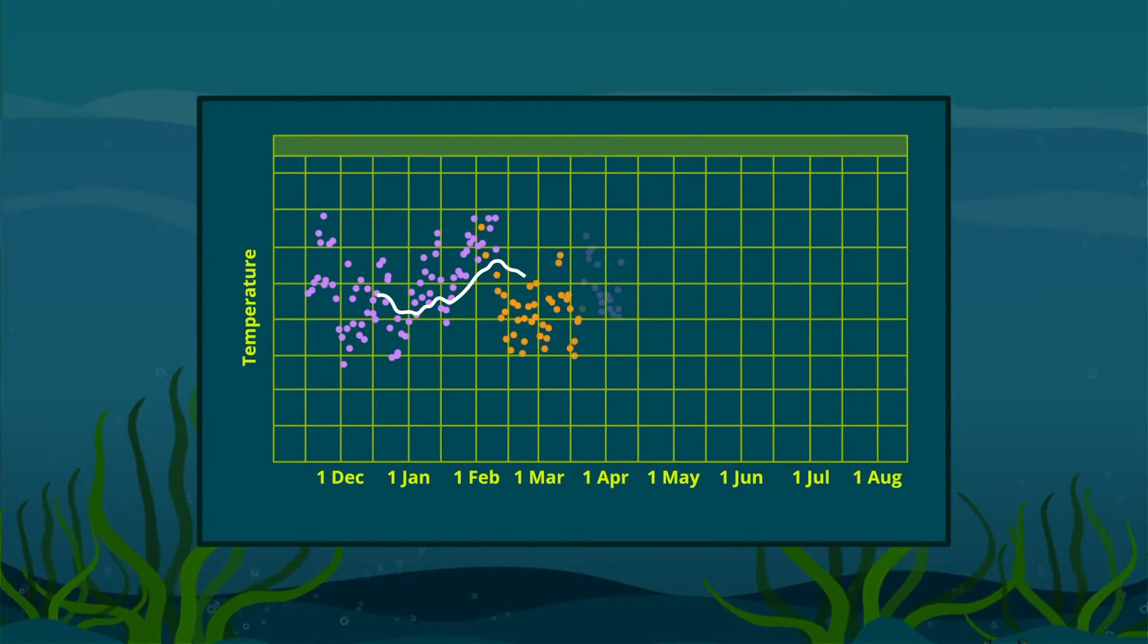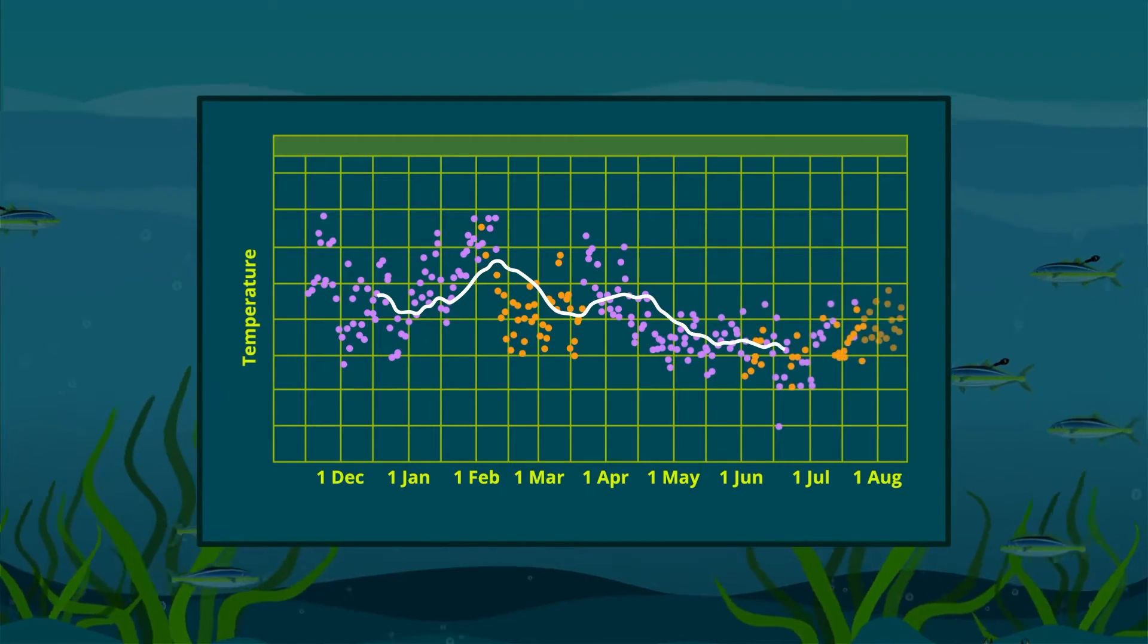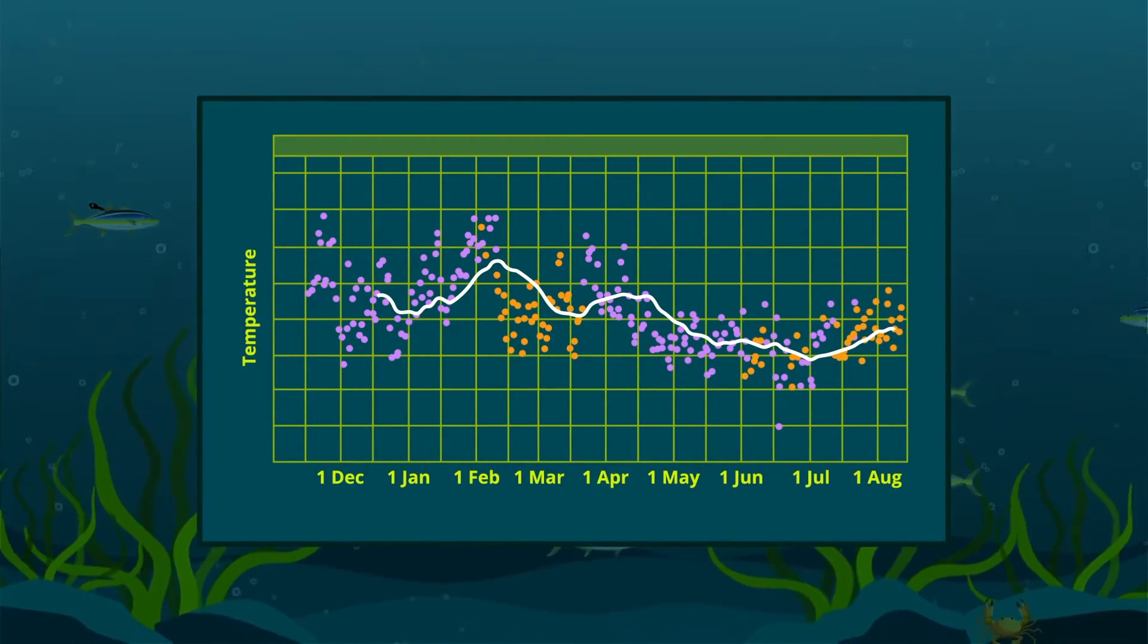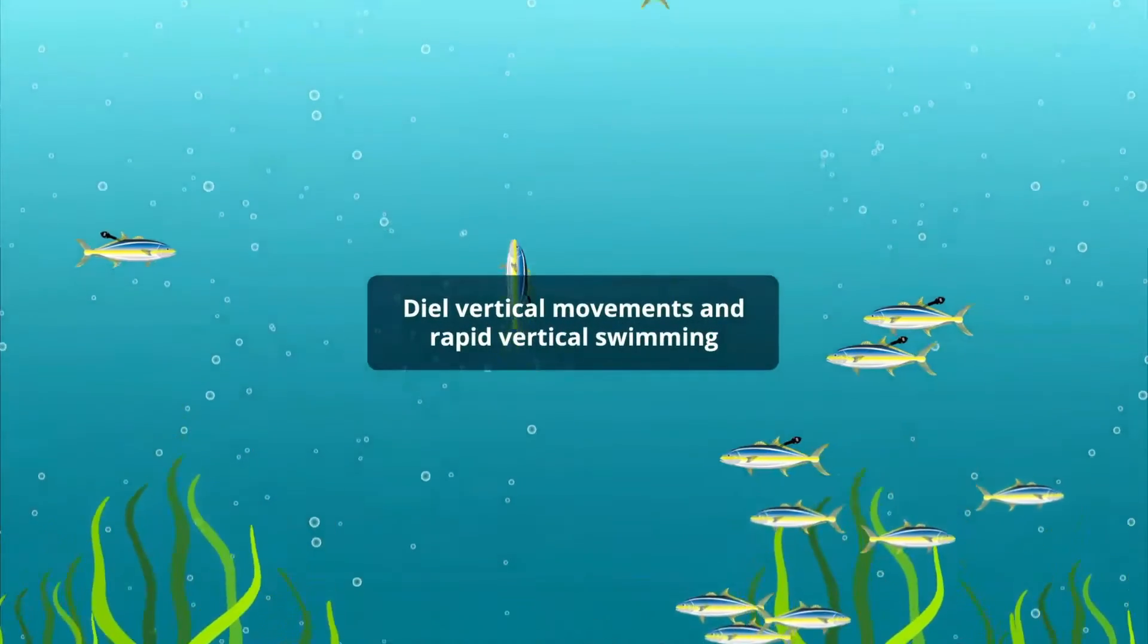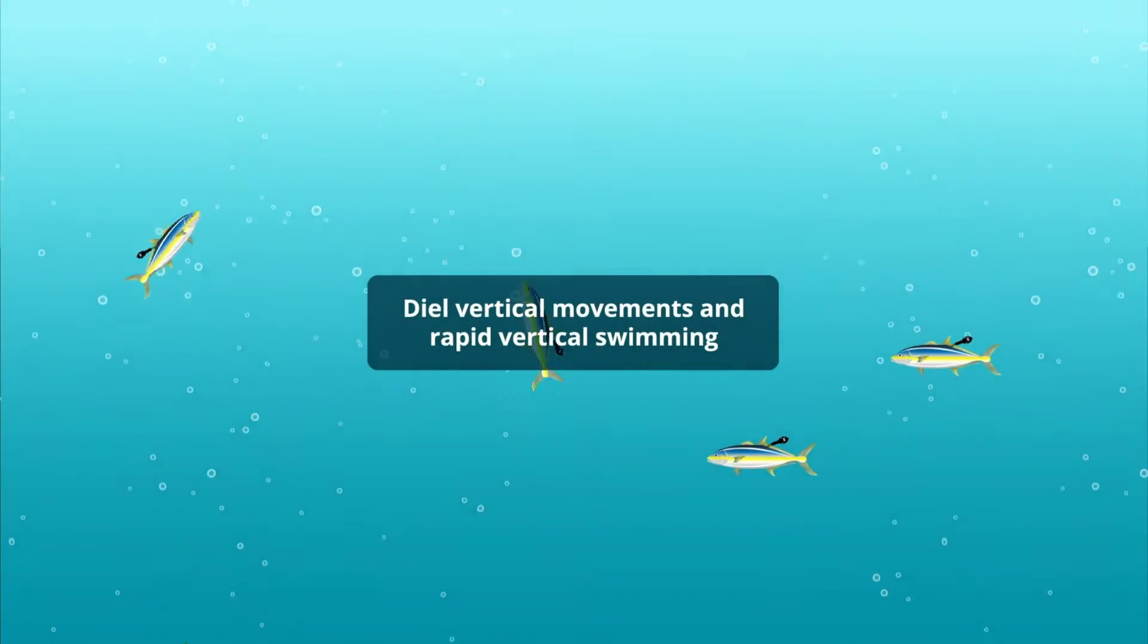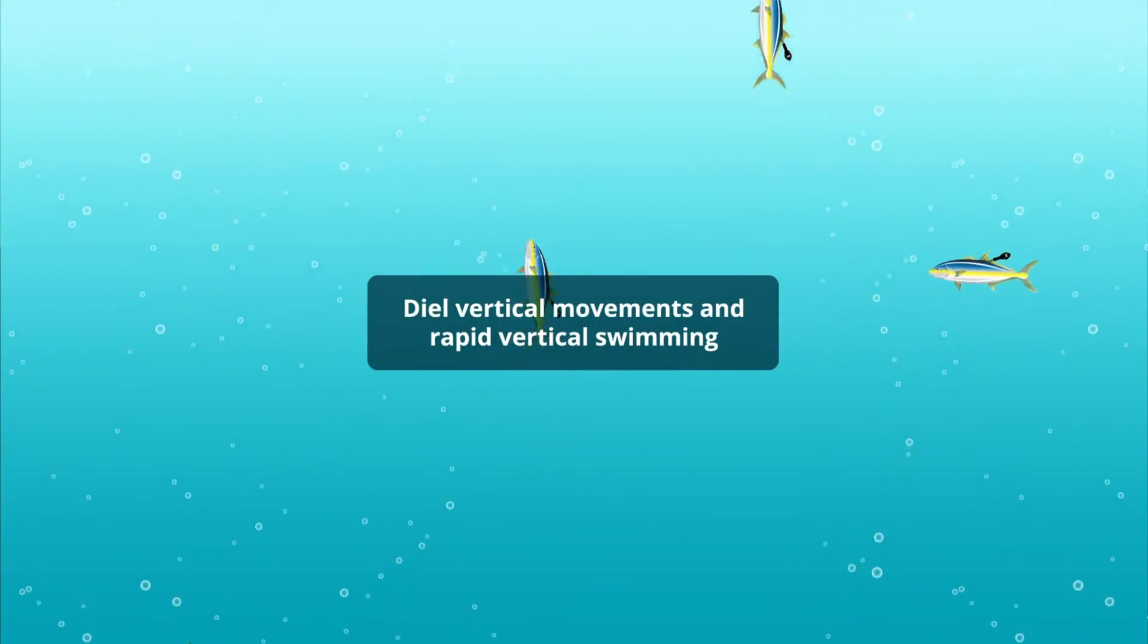The researchers, moreover, observed that following a gradual increase in water temperature due to the Kuroshio current, the fish displayed frequent diel vertical movements and rapid vertical swimming, which likely coincided with spawning.